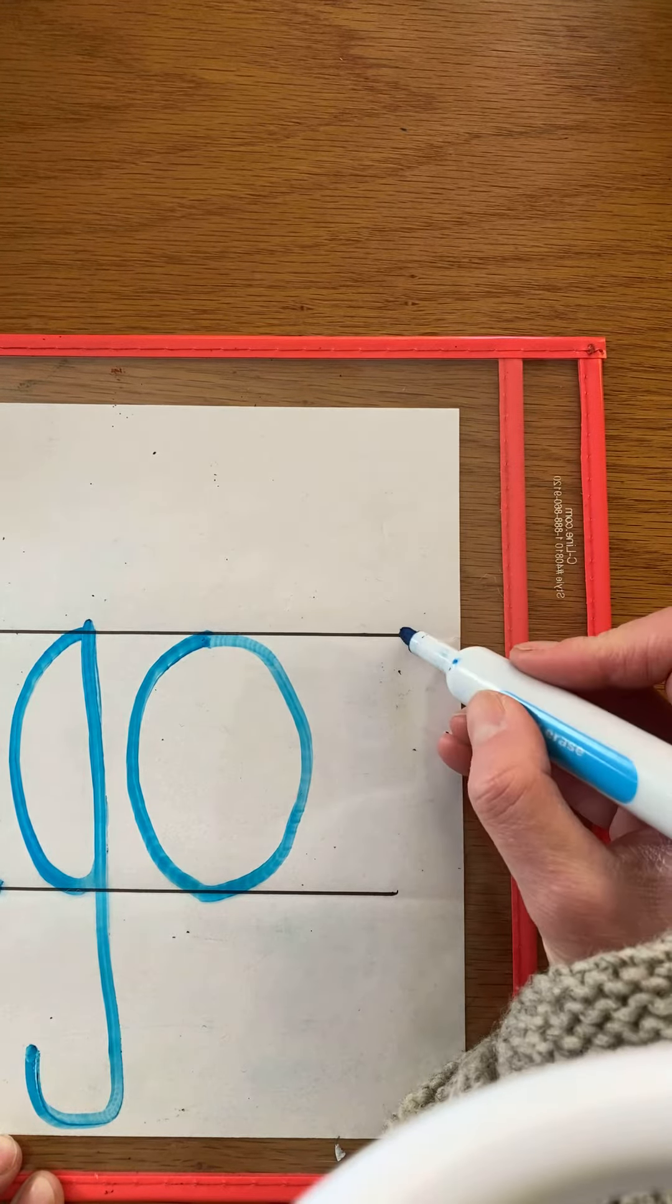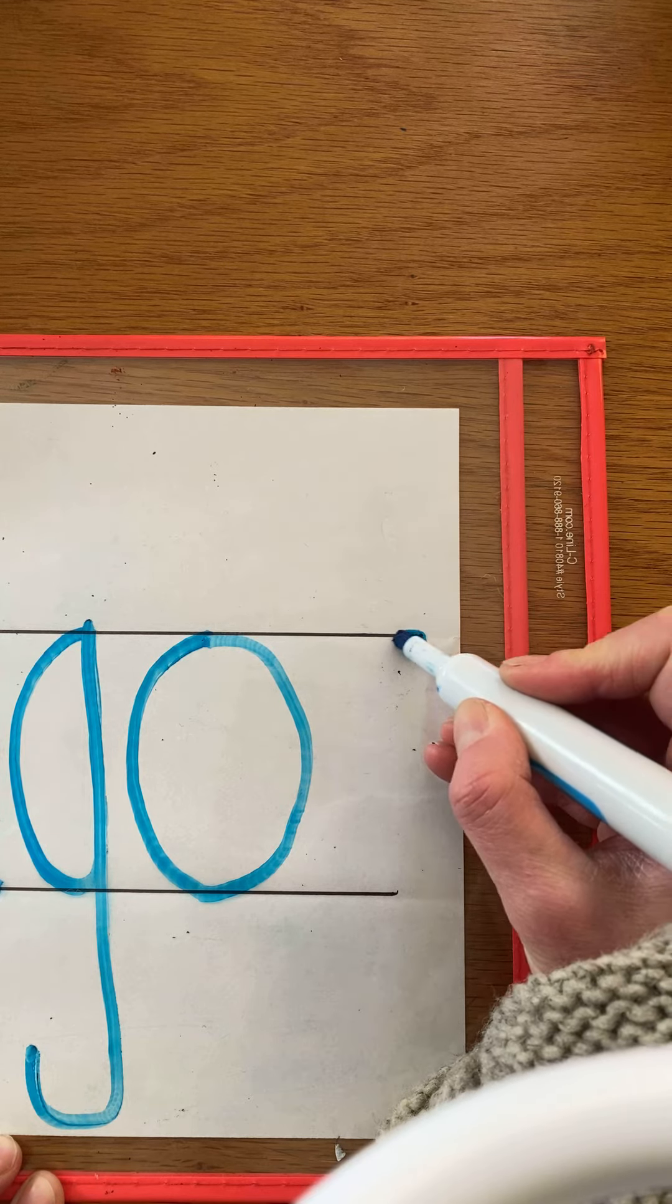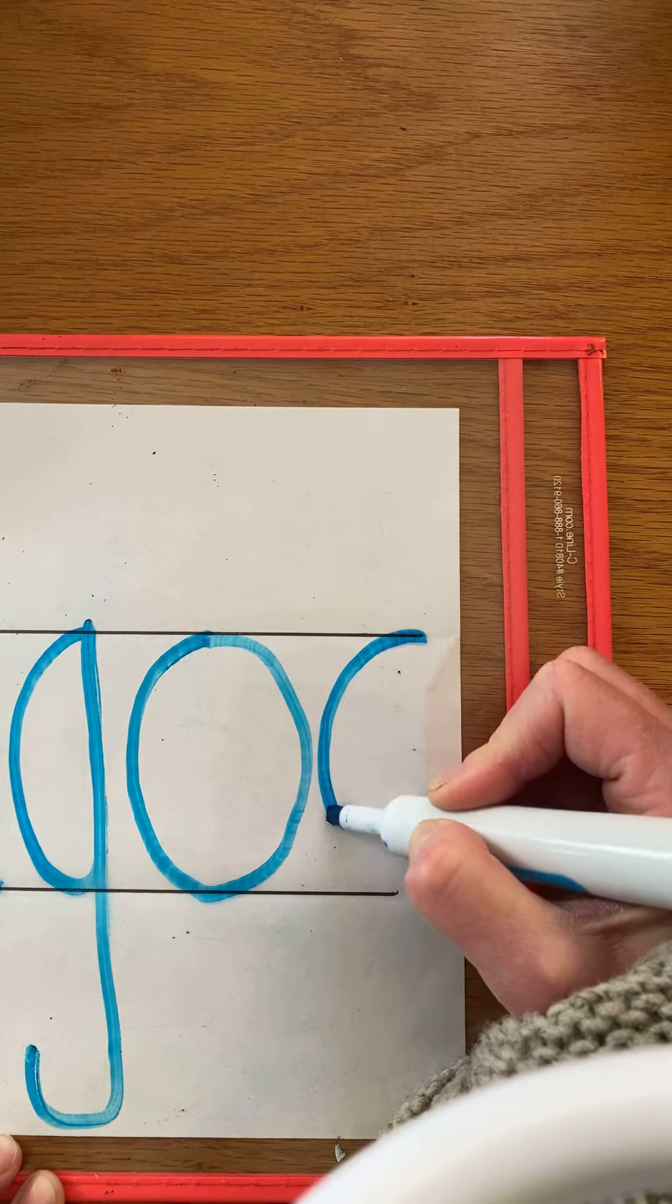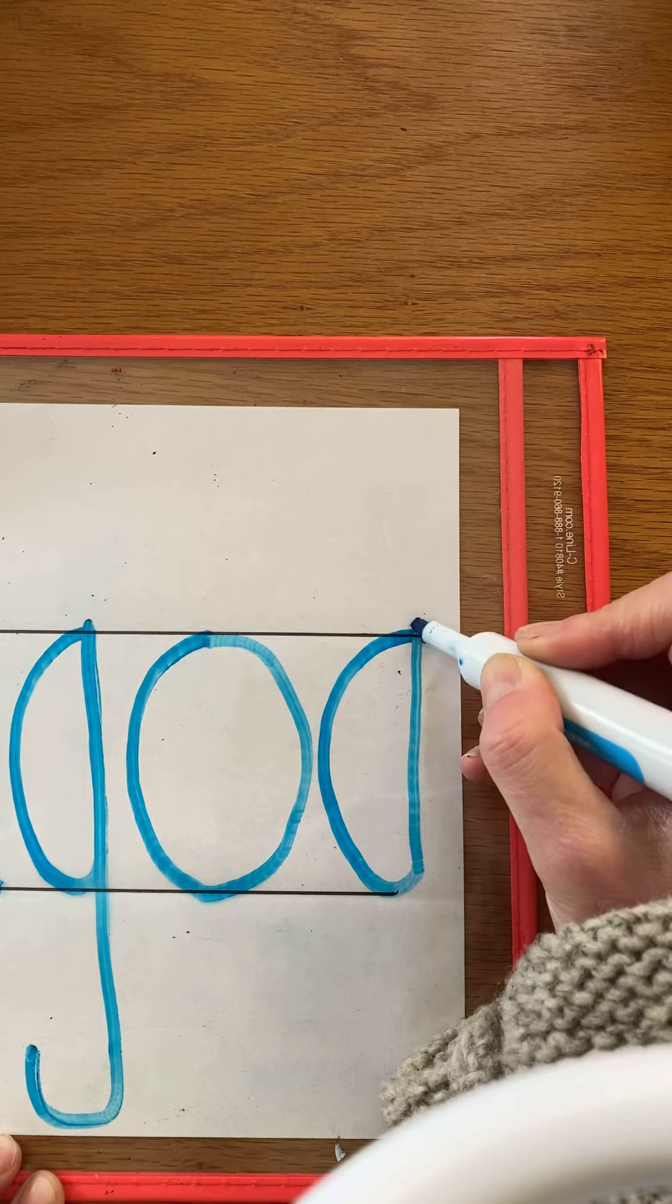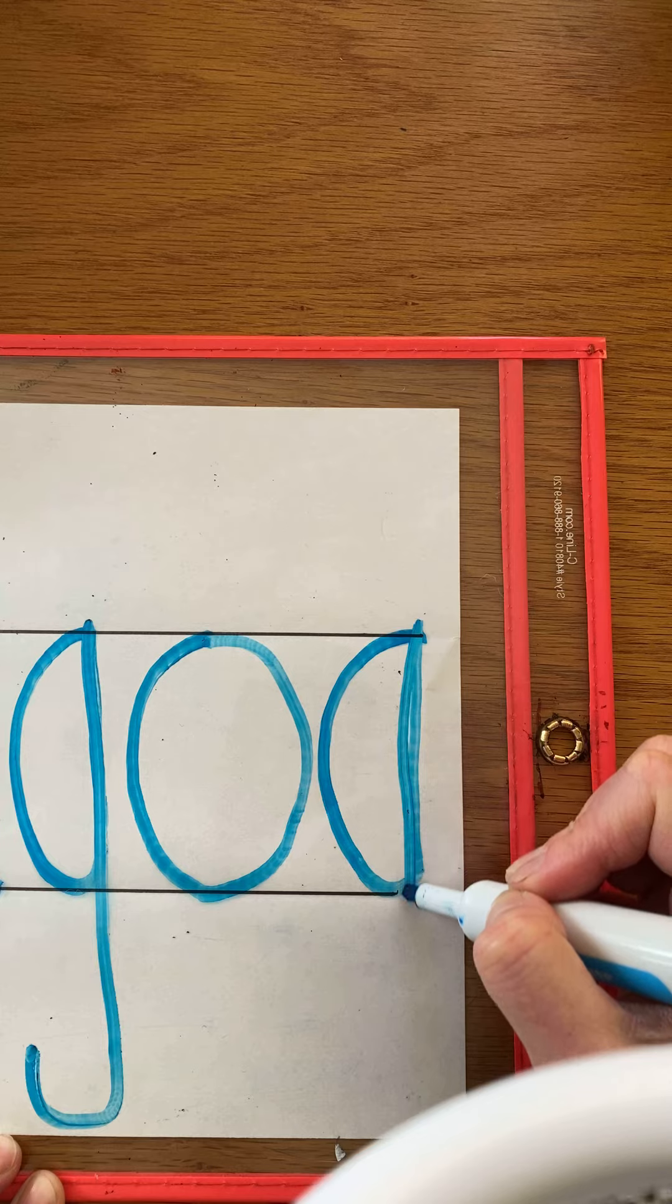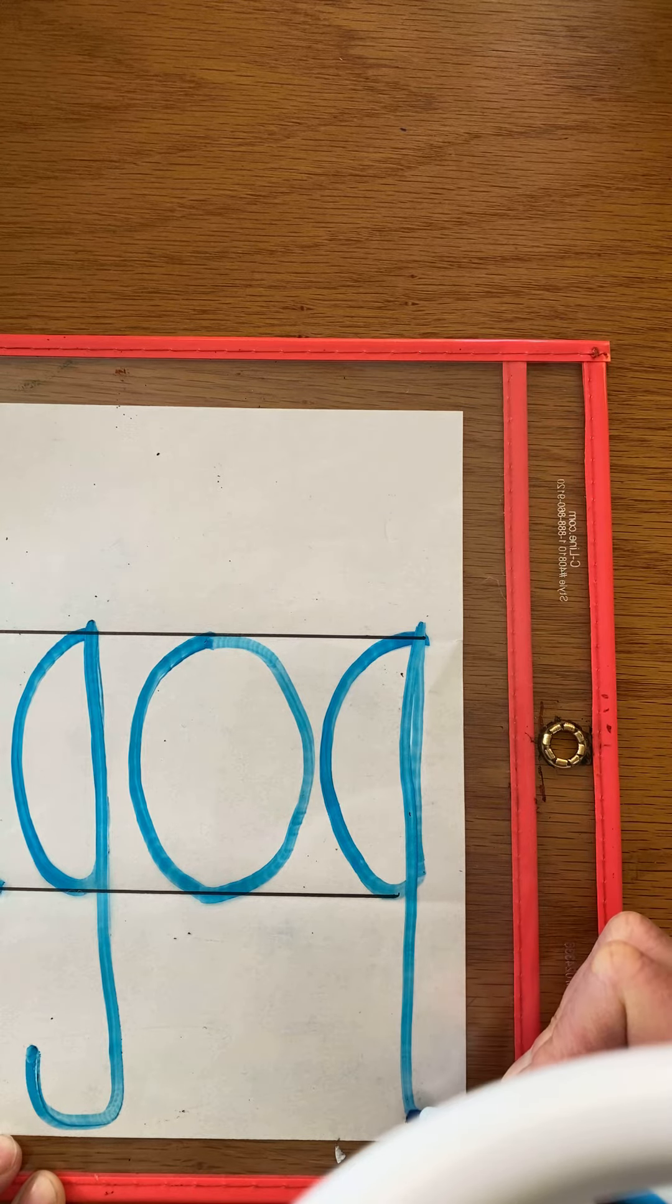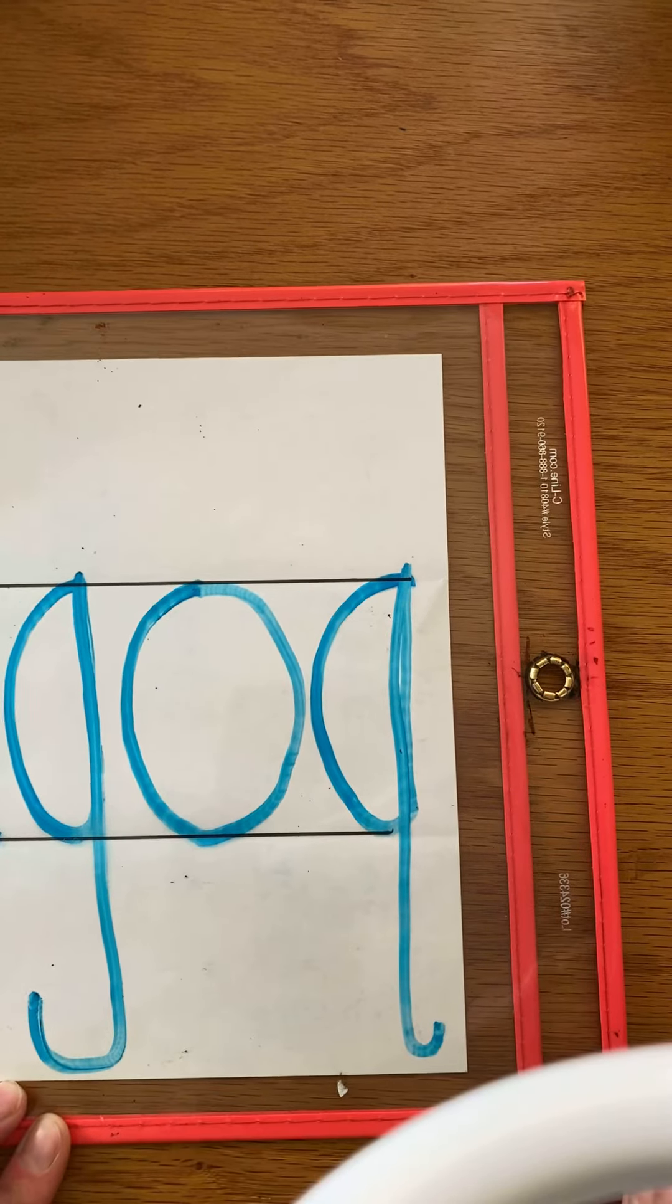Last but not least is the letter Q. We're starting the same way. Magic C, travel up, straight down like a ruler, and make a U-turn at the bottom.